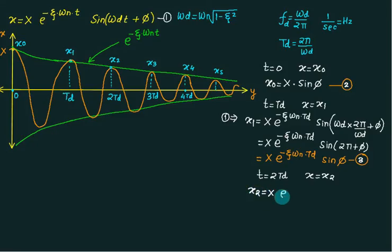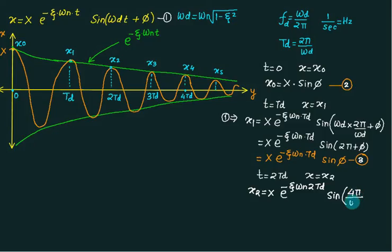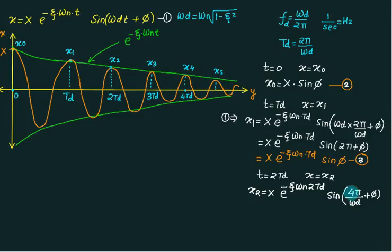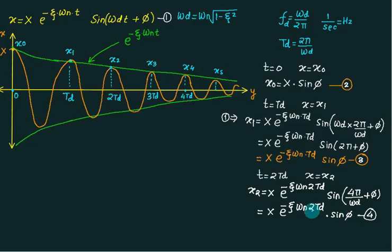For x2, substituting t equals 2 times td, the bracket becomes omega d times 2td plus phi, which gives 4 pi plus phi. Since 4 pi means 360 plus 360 degrees, we return to the same point, so sine phi again. Therefore x2 equals capital X times e to the power minus zeta omega n times 2td, multiplied by sine phi. Similarly, x3 uses 3 times, x4 uses 4 times.